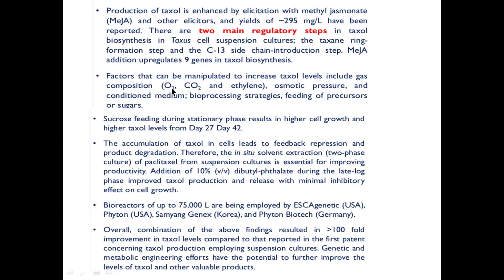Oxygen, carbon dioxide, and ethylene concentrations must be optimized for maximum synthesis of Taxol. Other environmental factors affecting Taxol yield include osmotic pressure and various bioprocessing strategies — whether shake culture, immobilized culture, cell suspension culture, agar culture, or solid suspension culture — all of these are optimized. Feeding of precursors and sugars like sucrose and glucose must also be optimized in terms of concentration.